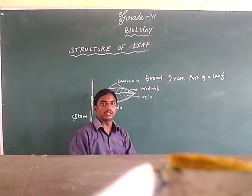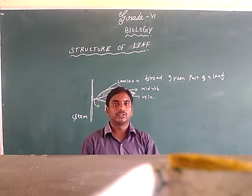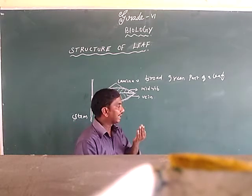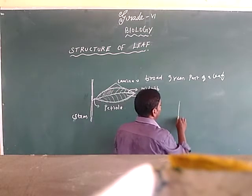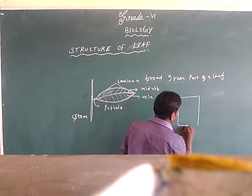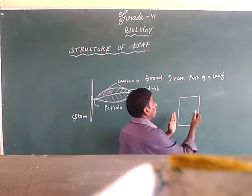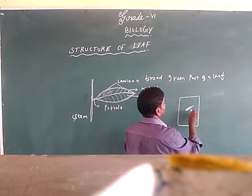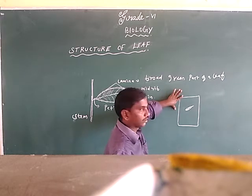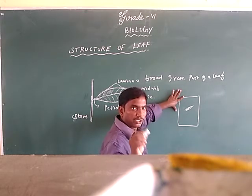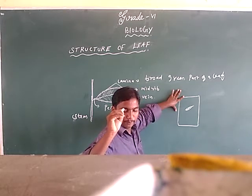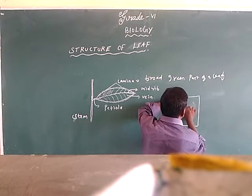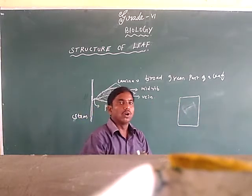How do you do this activity? Take one leaf and one white sheet of paper. Put your leaf under the white sheet of paper. Then hold the paper steady. Take one pencil, hold the pencil tip sideways, and rub on the paper over the leaf. Rub on that paper sidewise.